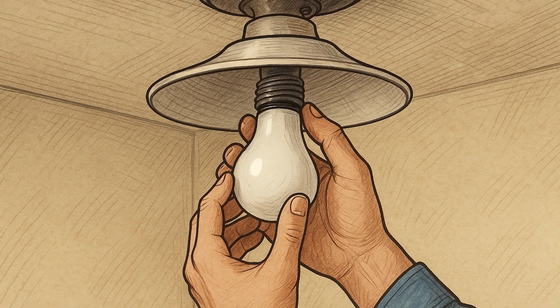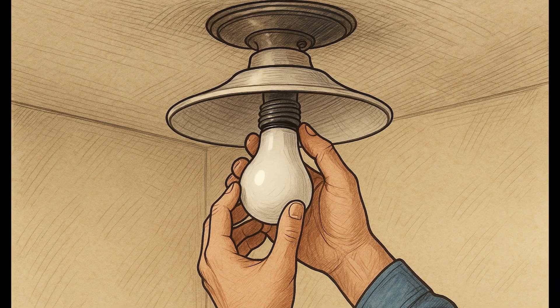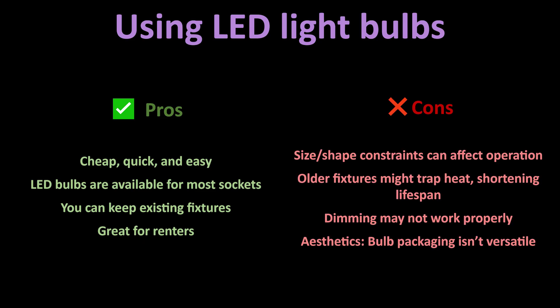Everything I've talked about so far has been about putting LED bulbs into conventional light fixtures. Certainly, there are advantages to that approach. It's cheap, quick, and easy. Literally a 30-second upgrade. LED bulbs are available for most existing socket types. You can keep your existing fixtures if you like. And it's perfect for renters or anyone who can't replace their light fixtures. The cons are that the size and shape constraints mean that LEDs may not perform as efficiently as possible. Older fixtures may trap heat, shortening bulb lifespan. Dimming can be inconsistent, especially with older dimmer switches not designed for LEDs. And the aesthetics. Bulb packaging isn't as versatile as integrated LED chips.